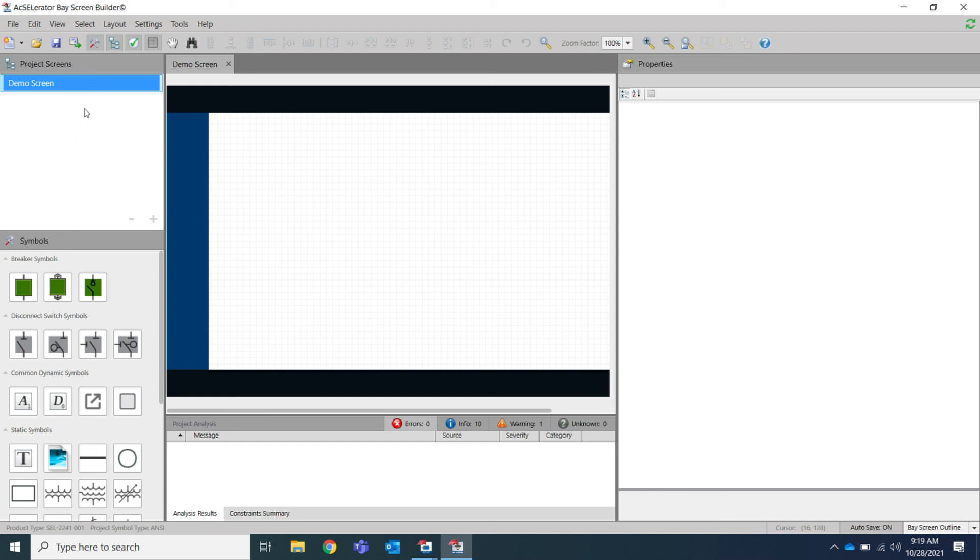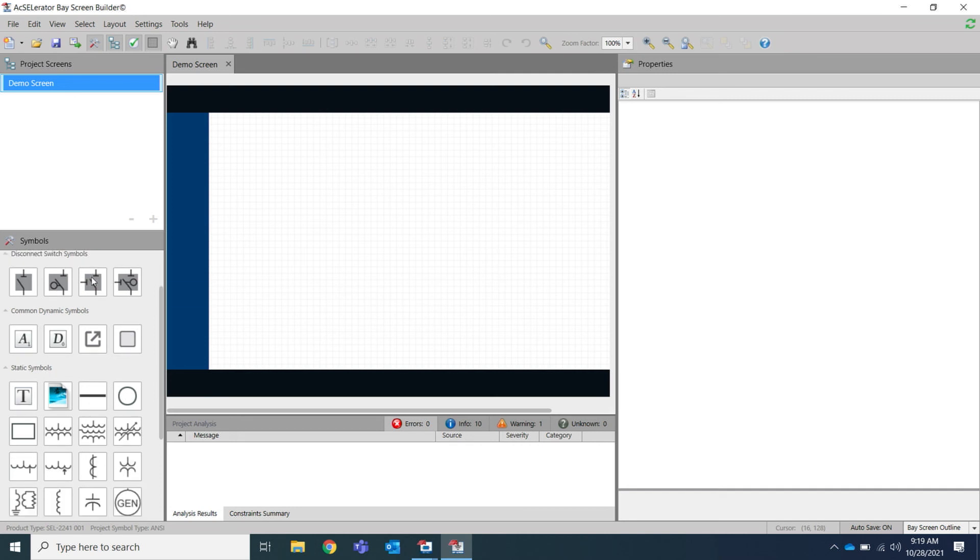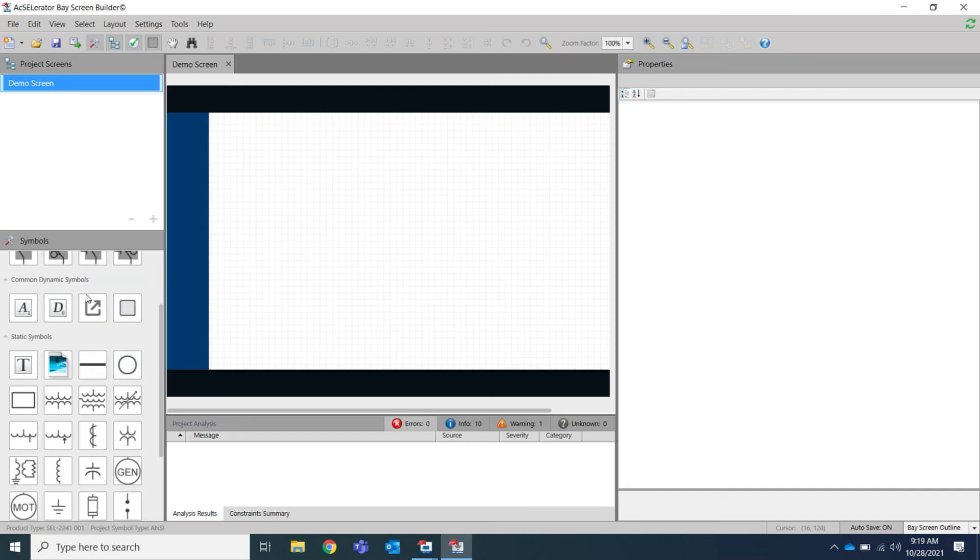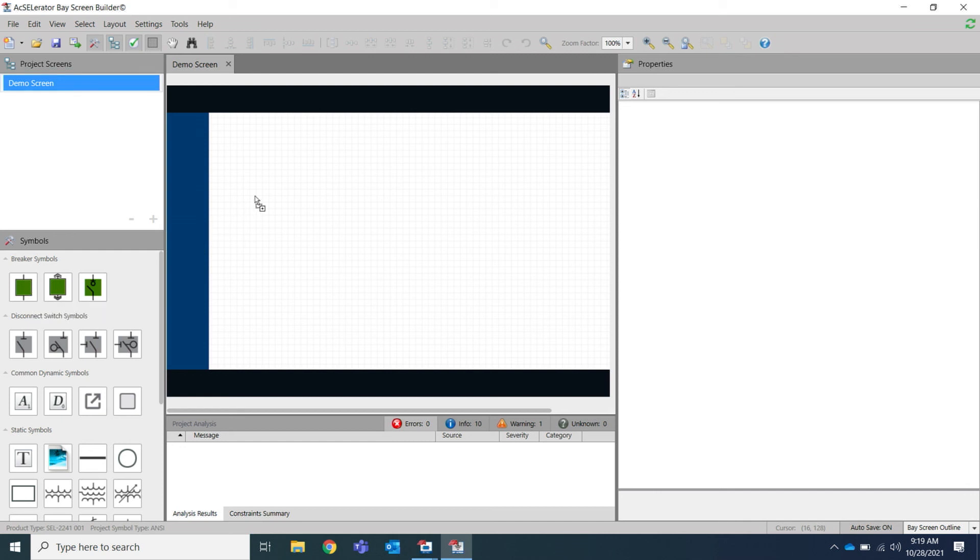The Axion Bay Controller supports up to 25 custom screens and you can add these screens through this plus button in the Project Screens window. The Symbols window contains all symbols that can be added to the Axion Bay Controller's custom screens. To add a symbol, simply click, drag, and drop that symbol onto the screen.